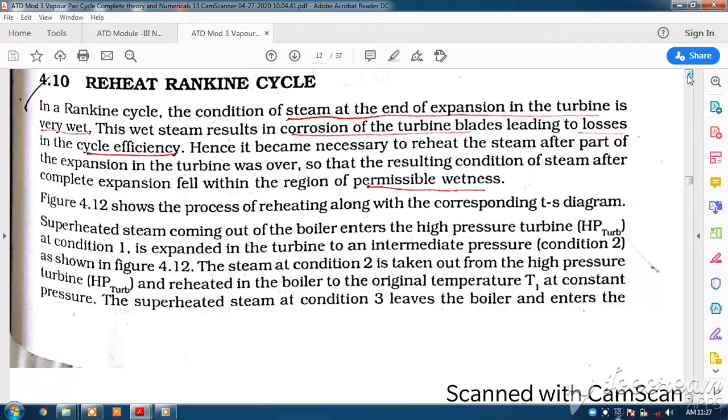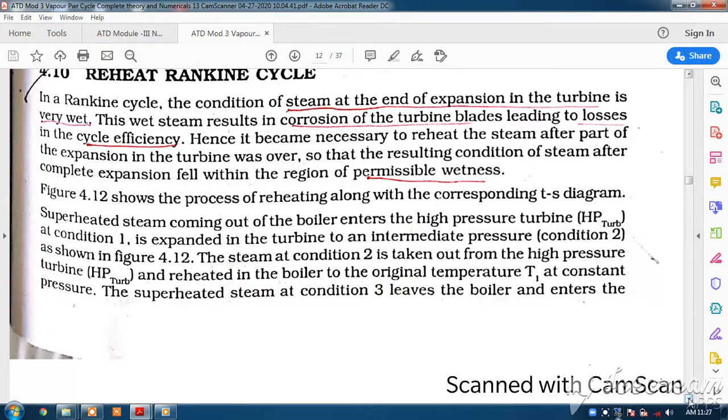Hence, it has become necessary to reheat the steam after part of the expansion in the turbine is over, so that the resulting condition of steam after complete expansion falls within the region of permissible wetness. We expect about 9 percent dry steam basically. We will see the reheating process along with the TS diagram.